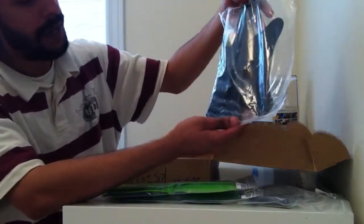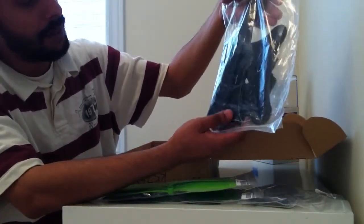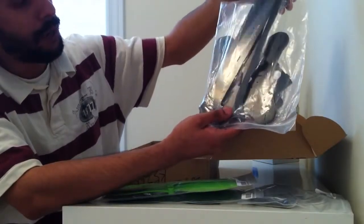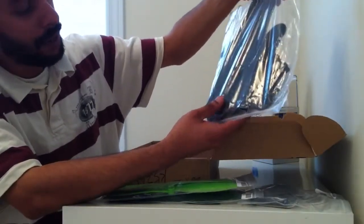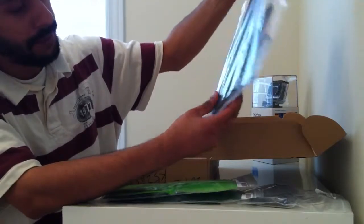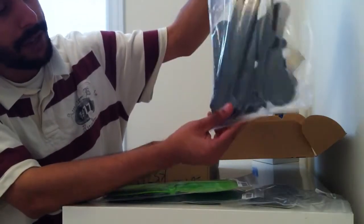Next, we have the hardware included in a Ziploc bag, but it seems to have popped out or torn out from the top portion. Hopefully everything is in the bag. This is our hardware for the X930.